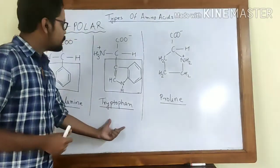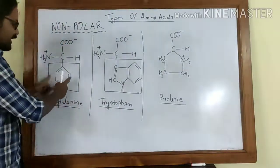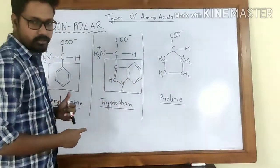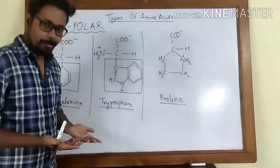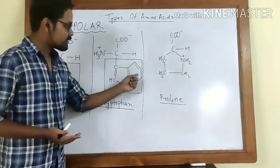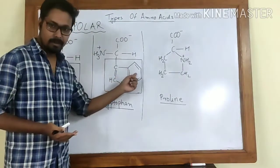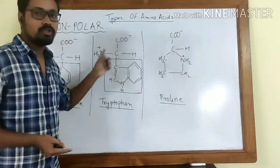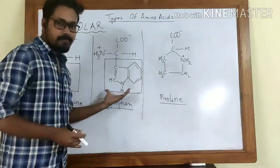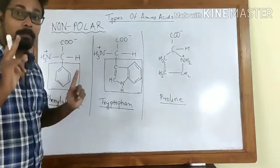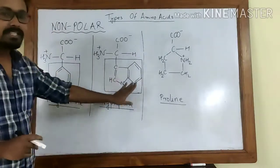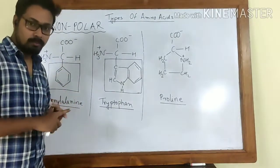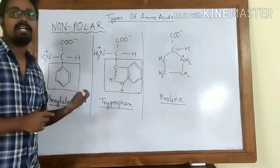Tryptophan contains an imidazole ring — a fused bicyclic structure with a six-membered ring joined to a five-membered ring. Phenylalanine has a single phenyl ring; tryptophan has these two rings combined. Since tryptophan is also aromatic, it can absorb light at different wavelengths. Both phenylalanine and tryptophan are aromatic side chains yet are still non-polar — they carry no charge and no polarity.